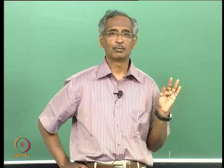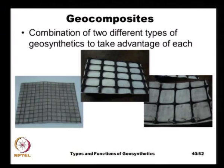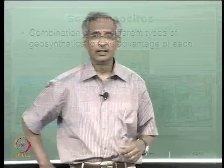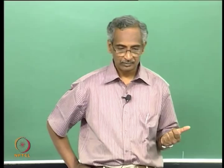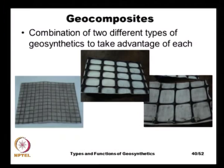By combining geotextiles and geogrids, geocomposites can provide reinforcement action, drainage action, and filter action simultaneously. One such product on the left-hand side can produce a very high force of the order of 200 kilonewtons per meter at a very low strain of less than 4 percent. Depending on the manufacturing process and materials used, geosynthetics can be made to provide multiple functions.